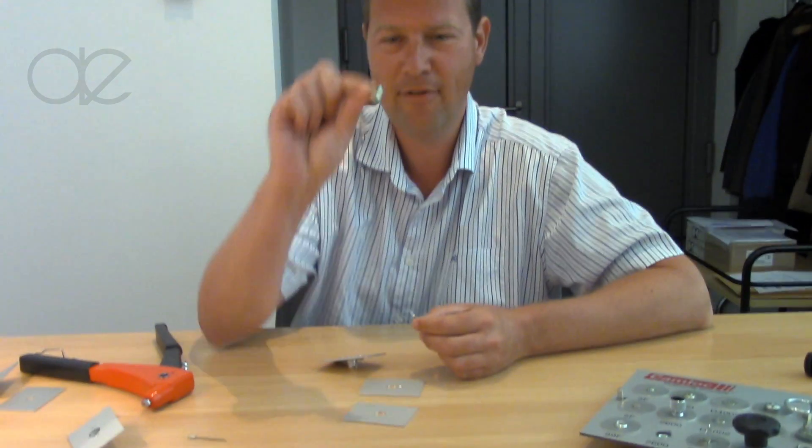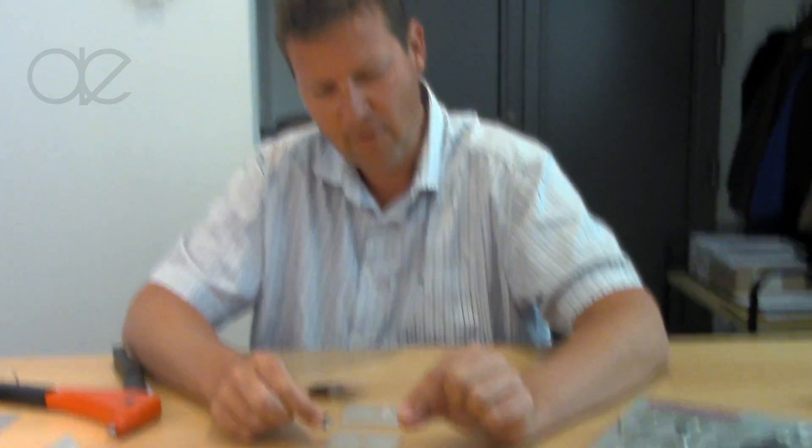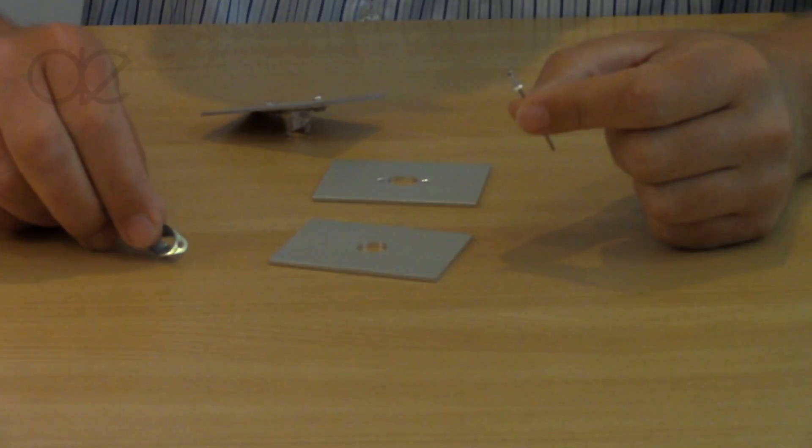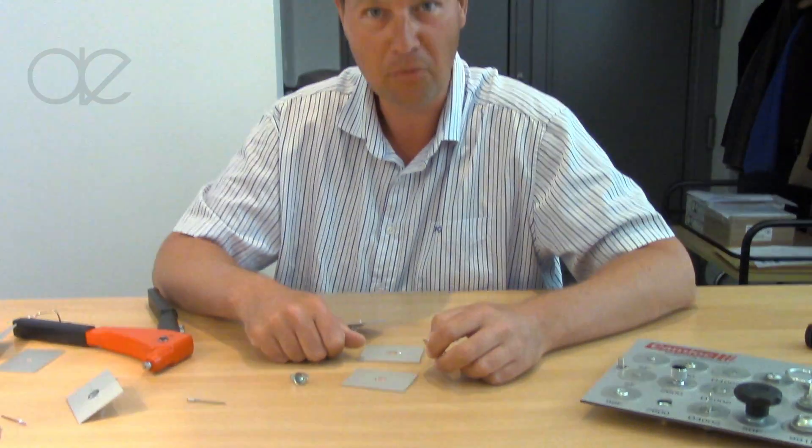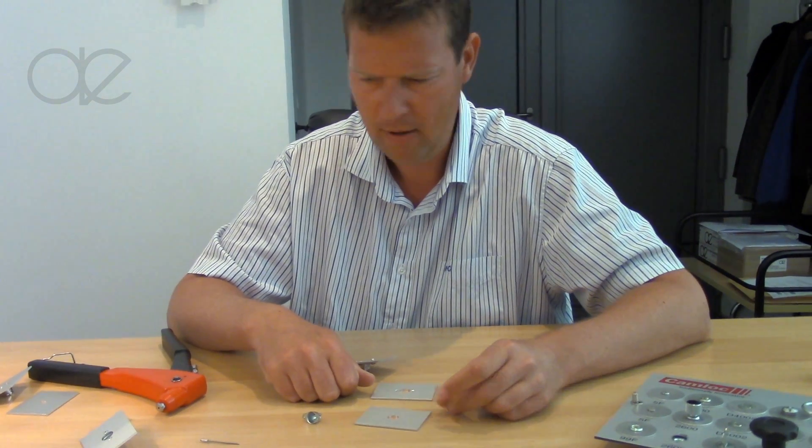Here you see the receptacle, this is the rivet, and the issue you have is that you might order the wrong rivet. Why?